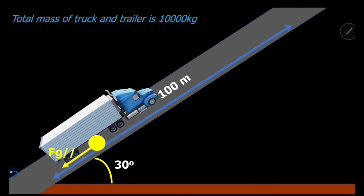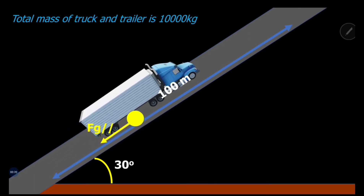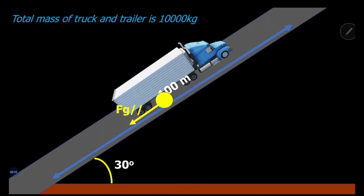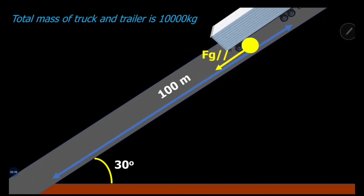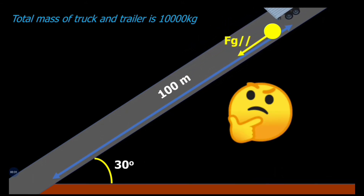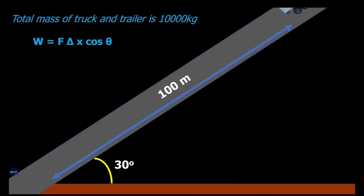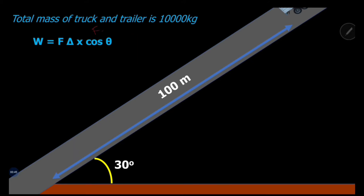As the track goes up the incline, the parallel component of gravity acts downwards, so it's acting in the opposite direction of motion. The formula is W equals F·Δx·cosθ. The F in this case represents the parallel component of gravity — FG parallel — that is the force doing the work on the object. So it's wise to calculate this component of gravity separately.